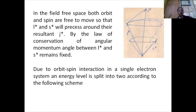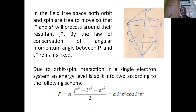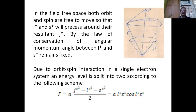Due to spin-orbit interaction in a single-electron system, an energy level is split into two according to the following scheme. The splitting is given by: gamma equals a(j*² - l*² - s*²)/2, which equals a·l*·s*·cos(angle between l* and s*).